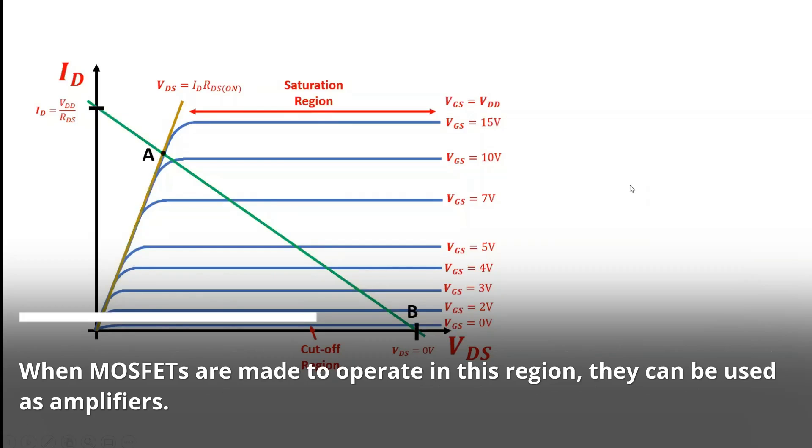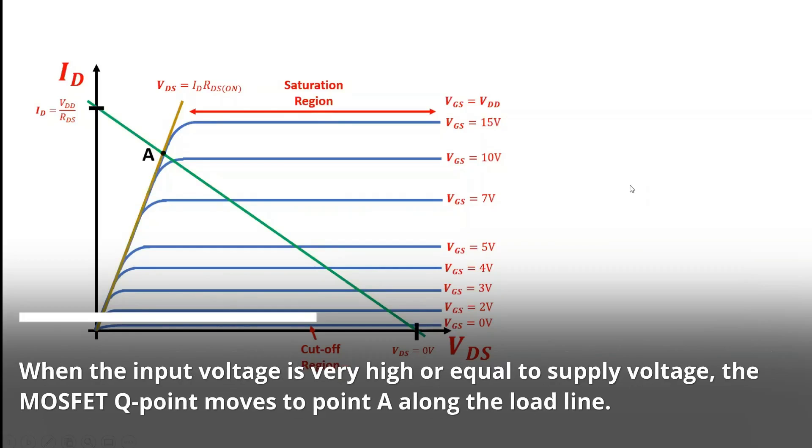When the input voltage is very high or equal to supply voltage, the MOSFET Q point moves to point A along the load line.